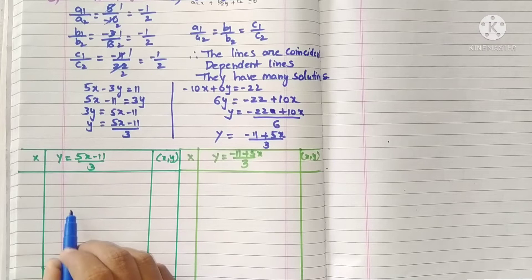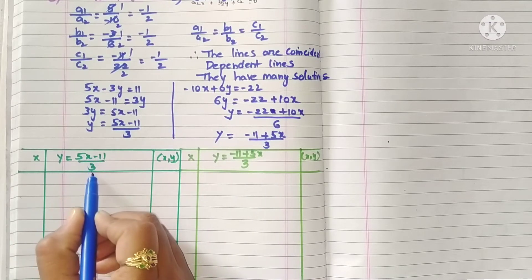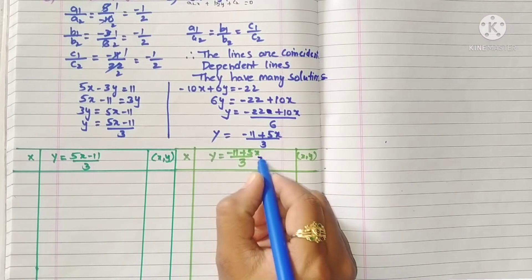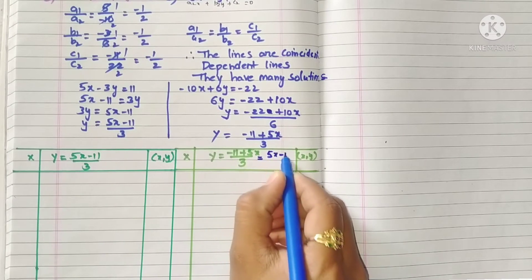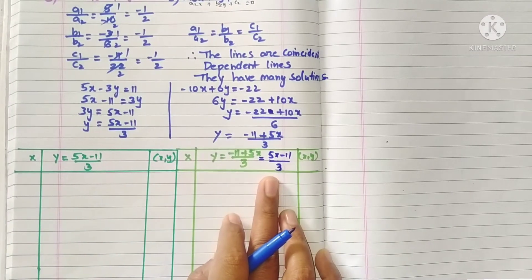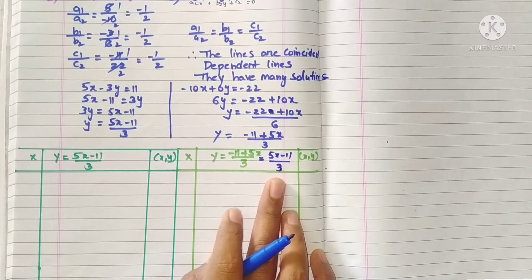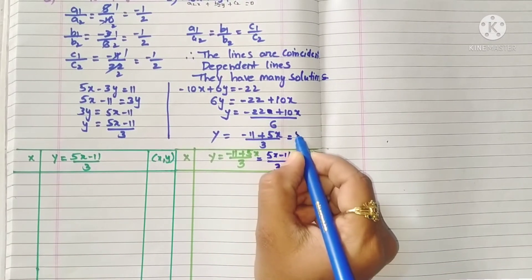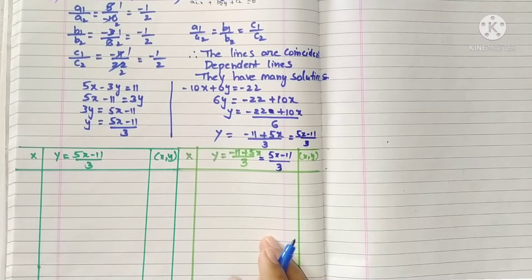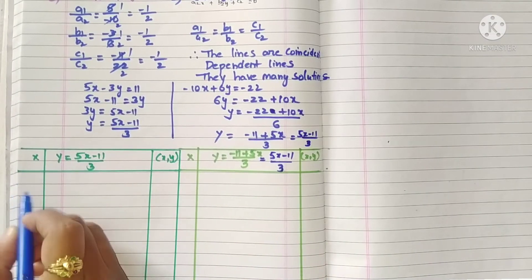We want to find the points. Here y equals 5x minus 11 by 3, and this is also 5x minus 11 by 3. Both are the same. The calculation is very simple because these lines are coincident.